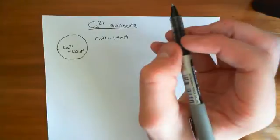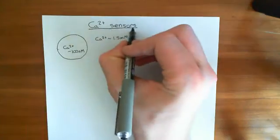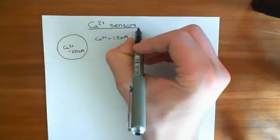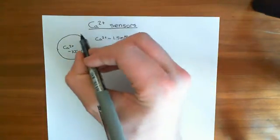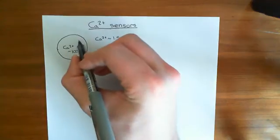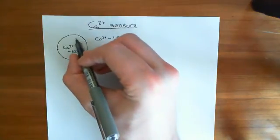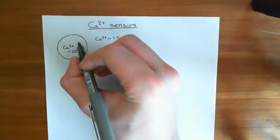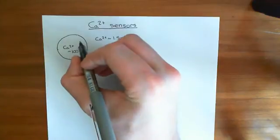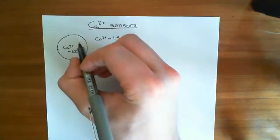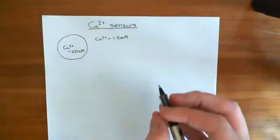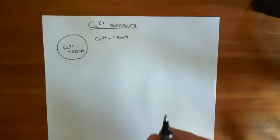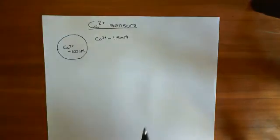What we want to do is create some sort of molecule that will be able to tell us when calcium goes up in a region of the cell, so that we're actually going to be able to see where calcium is going up and where you're getting calcium signalling. So that's the topic for this video: calcium sensors.